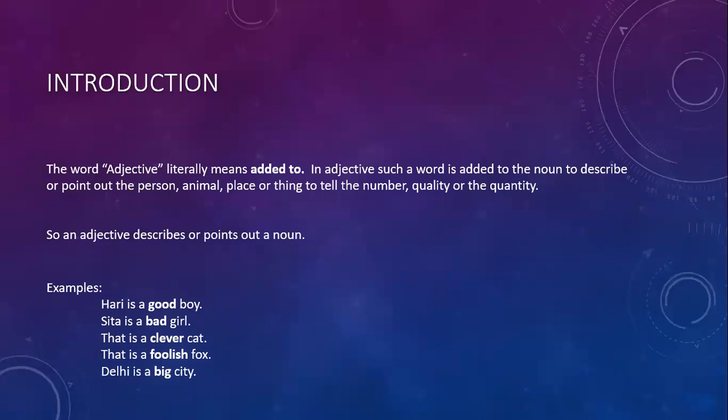The word 'adjective' literally means 'added to.' An adjective is a word added to a noun to describe or point out a person, animal, place, or thing — to tell the number, quality, or quantity. So an adjective describes or points out a noun. Examples: Hari is a good boy. Sita is a bad girl. That is a clever cat. That is a foolish fox. Delhi is a big city.